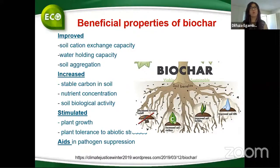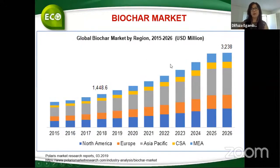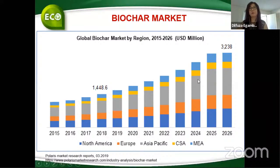Some types of biochar also suppress pathogens. Looking at the market, from 2015 it has been increasing, and projections to 2025 show growth in USD millions. Most of this biochar market belongs to the Asia-Pacific region, which is why we have very close cooperation with Malaysia, where many companies are already producing and marketing biochar.